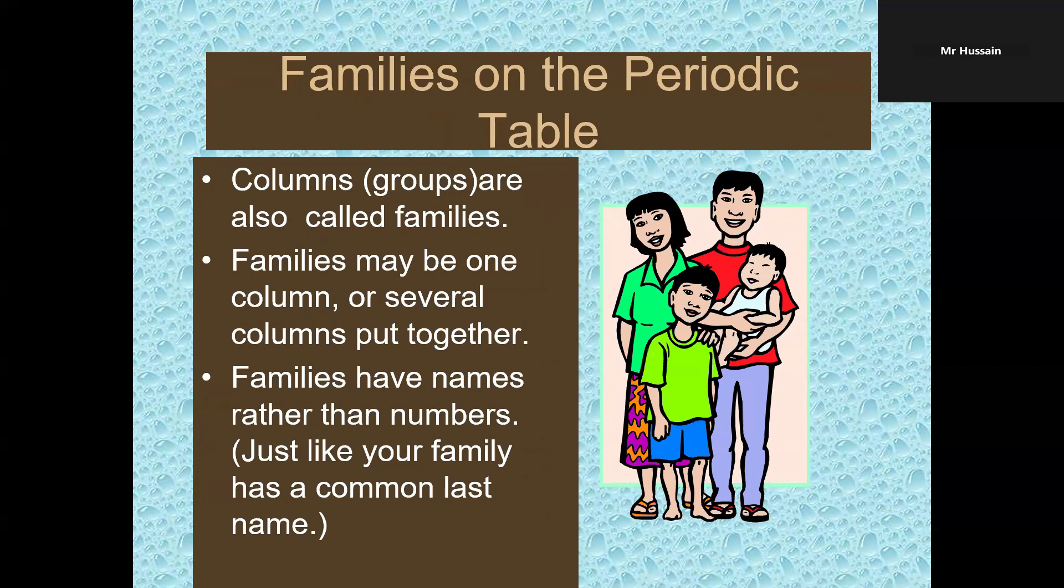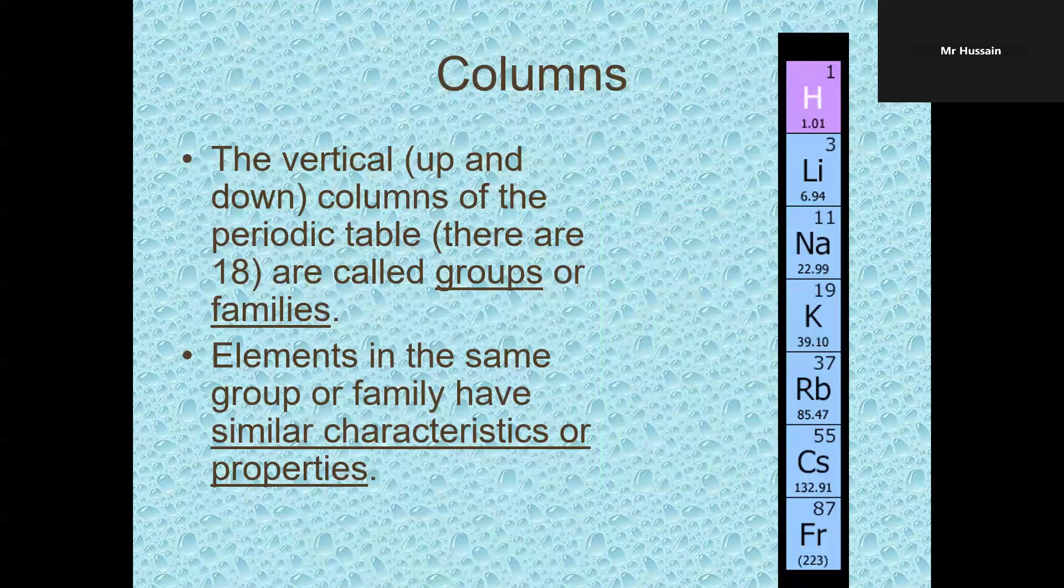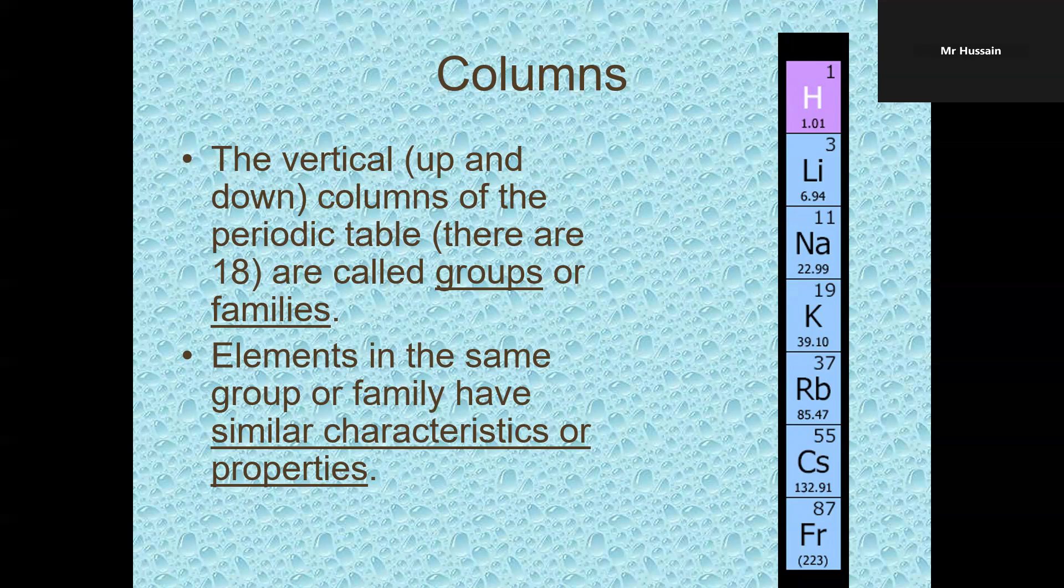Families on the periodic table. Columns or groups are also known as families. Families may be one column or several columns put together. Families have names rather than numbers, just like your family has a common last name. Elements in the same group or family have similar features, similar physical and chemical properties.